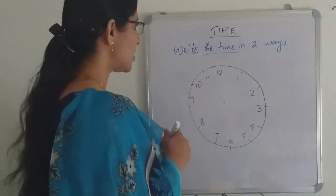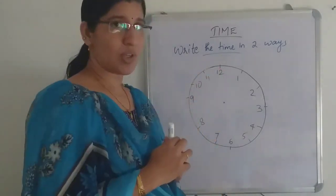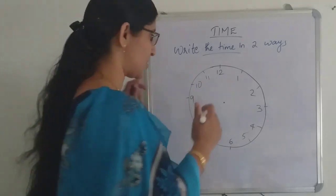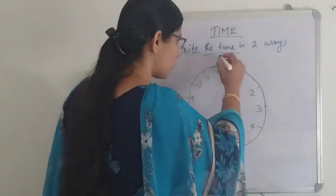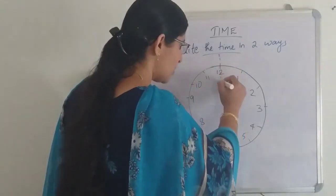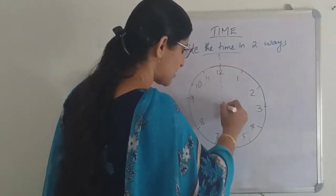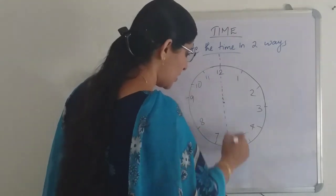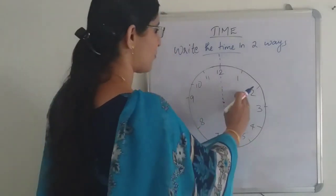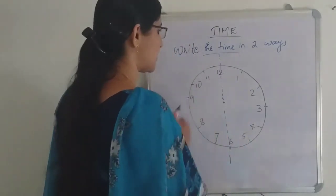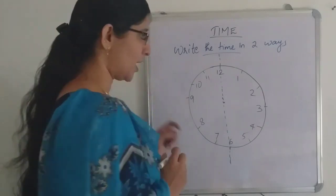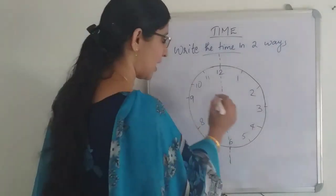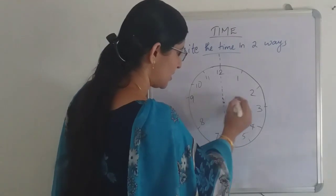Here I draw one clock, and I'm going to divide the clock into two equal pieces — this is the first half and this is the second half. I'm also going to draw one time on it.